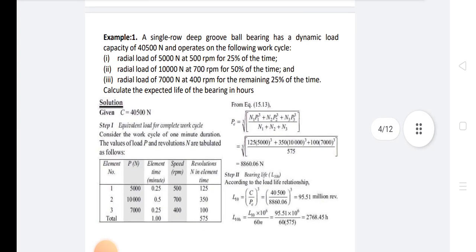Example 1: A single row deep groove ball bearing has a dynamic load capacity of 40,500N and operates under the following work cycle. Radial load of 5,000N at 500 RPM for 25% of the time.